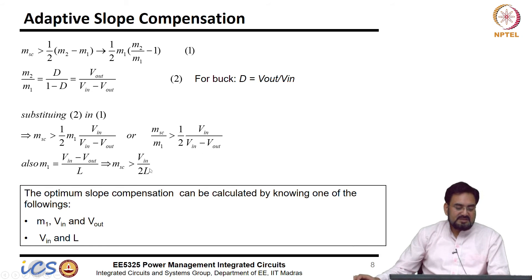So, I can make this slope compensation varying with Vin as a function of V. Or if you do not know L then you can take the information from Vout, you can do again the same thing.